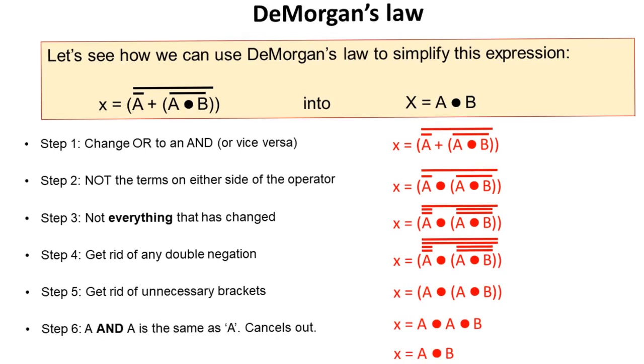Well, because we've managed now to get ALL AND statements in here, we can simplify the A AND A. Because, of course, A AND A is exactly the same as simply saying A. They cancel out. So we can get rid of one of these, and we end up with our simplified expression of X equals A AND B.